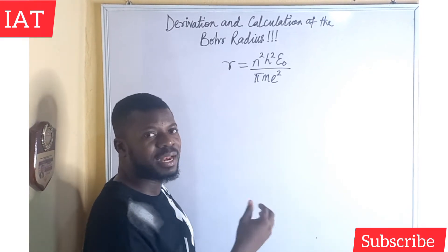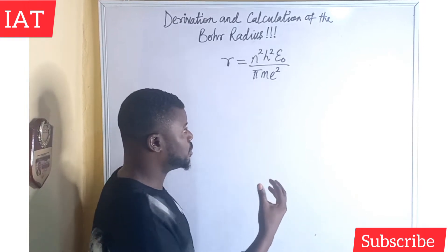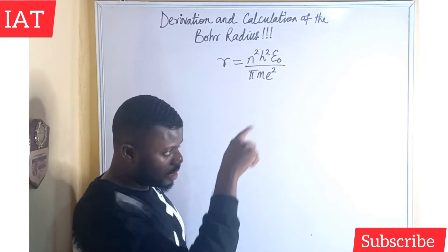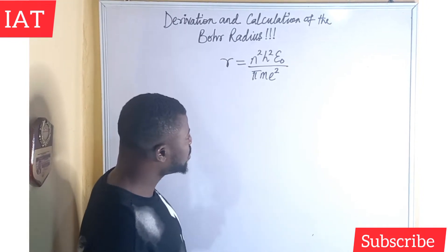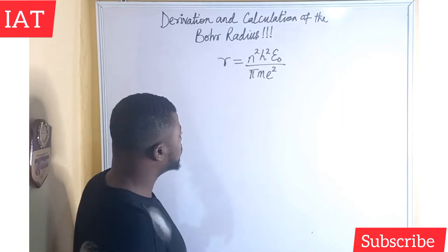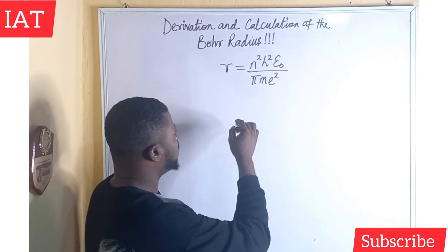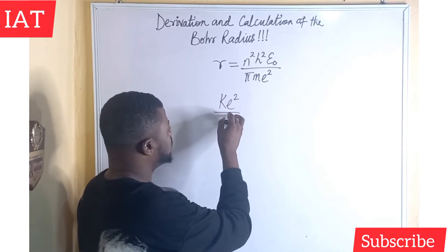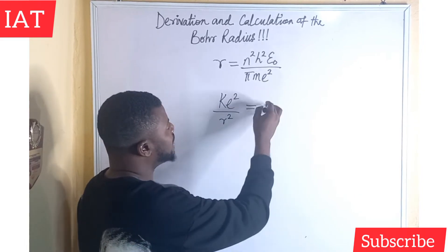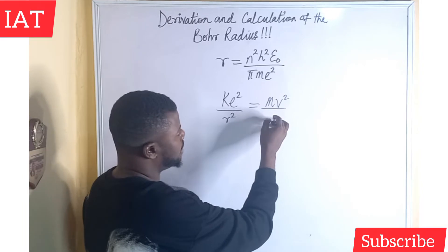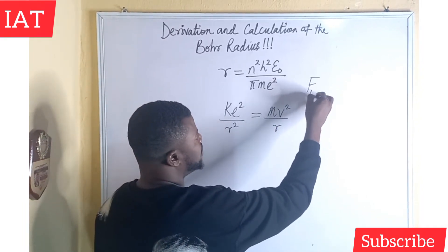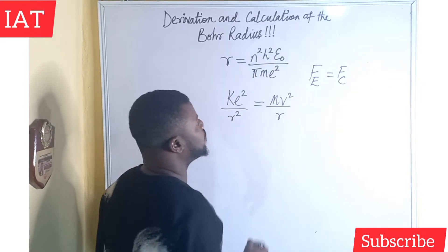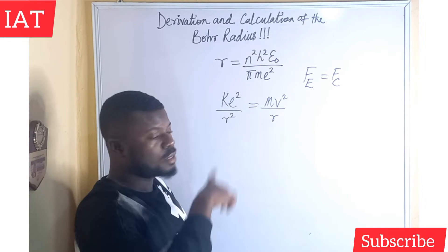If the electron revolves around a circular orbit in a dynamic position, it needs a centripetal force to balance the Coulombic force. We know that centripetal force is the force that pulls an object towards the center of a circle. So for the electron to remain in its dynamic circular orbit, the electrostatic force must balance it. Bohr's expression is that the Coulombic or electrostatic force will have to balance the centripetal force for an electron to constantly revolve around the nucleus of an atom.